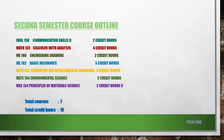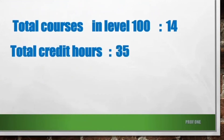We also have Environmental Science (2 credit hours) and Principle of Material Sciences (2 credit hours). Principle of Material Sciences is important because you'll be doing it for the rest of your academic semesters from second semester onwards, excluding first semester. That gives us seven courses with 18 credit hours for second semester, a total of 35 credit hours for level 100, and 14 total courses.